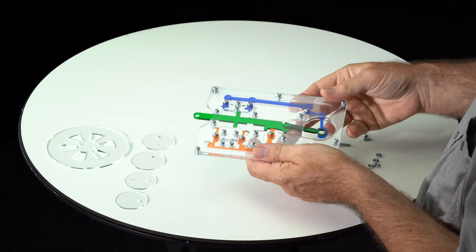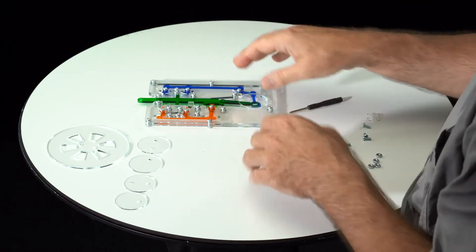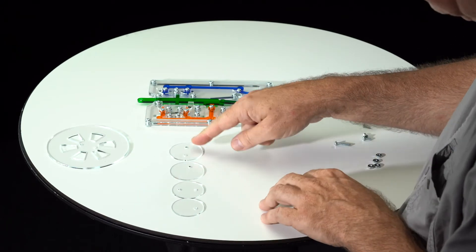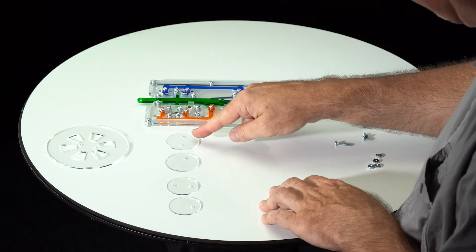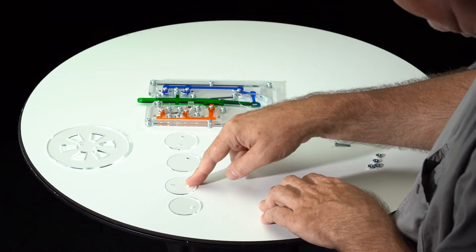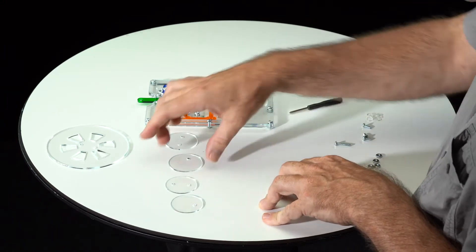So we got everything together here. Now we just need to assemble the flywheel mechanism. We're using these parts. Now there are four discs. They're all different. There are two big ones, two small ones. And you know, there's a big one with two holes, a big one with one hole, a small one with two holes, a small one with one hole. We start with the big one with one hole.